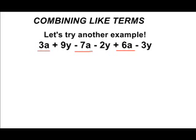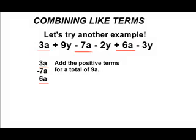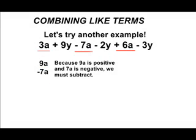So we are going to proceed to add all the variables together with the variable of a first. We have positive 3a and positive 6a, which would give us 9a. But then we also have a negative 7a. Although it says minus 7a, one minus sign is considered the same thing as a negative. So 9a minus 7a would give us 2a.